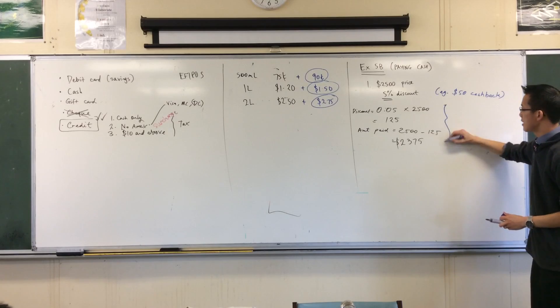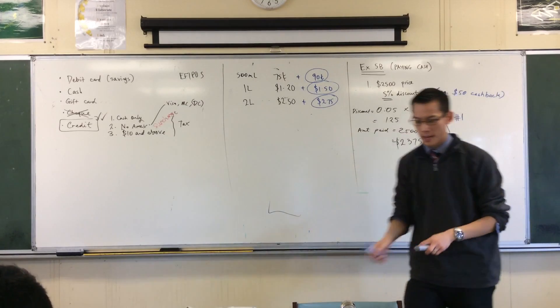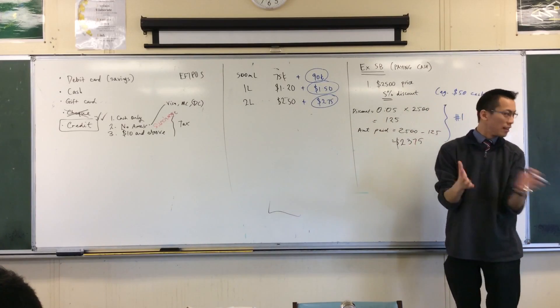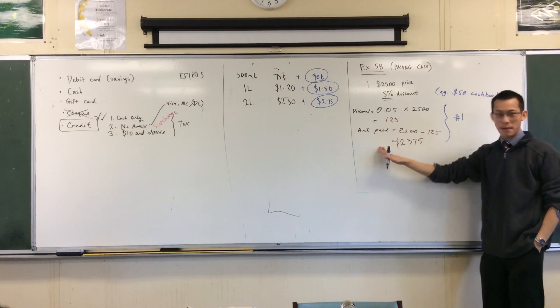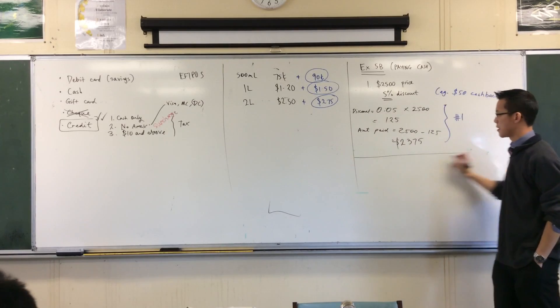You work out what the discount is, and then you subtract it from the original amount. There's a quick way. It's a little bit more mentally tricky, but I'll let you decide which one you like. Instead of working out the discount and then this amount paid separately, I can just go straight to this amount paid. I'll show you how. This is my second method.